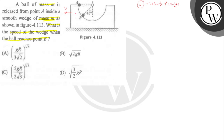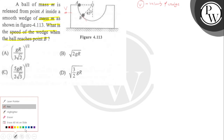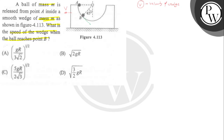In the wedge frame, the velocity of the ball will be tangential. Let's call this small v — the velocity of the ball with respect to the wedge. Since this is a 45° angle, the component of small v in the horizontal direction will be v·cos45.